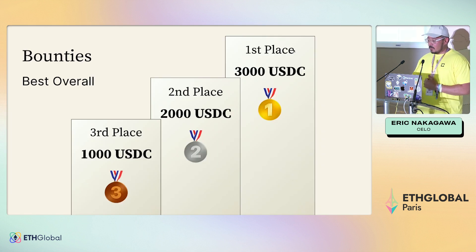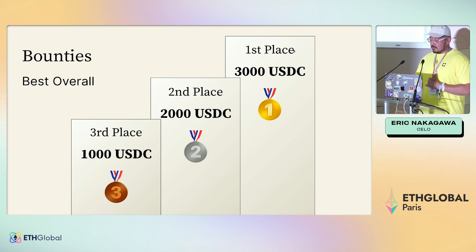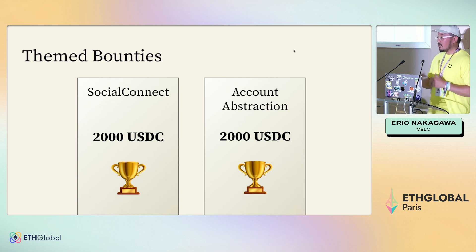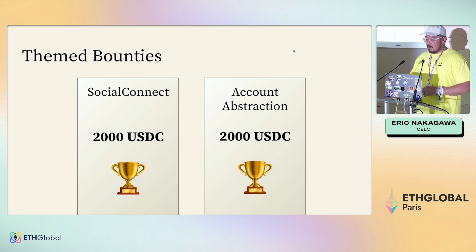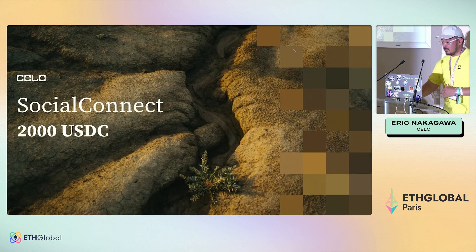Going to quickly run through our bounties. If you're building, we are giving out $3,000 for first place, $2,000 for second, and $1,000 for third. We're also looking for people to implement Social Connect and account abstraction on Celo. So without further ado, here's Harpal to talk about each of these.